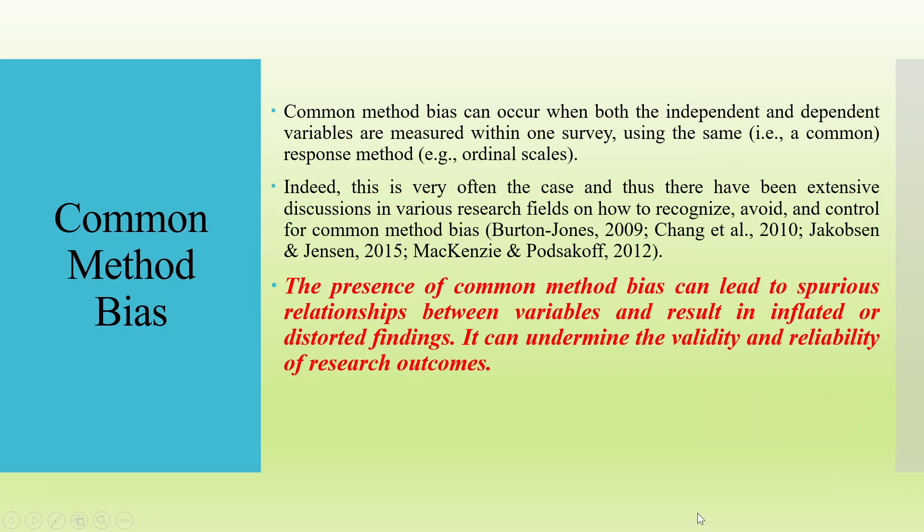Common method bias can occur when both the independent and the dependent variables are measured within one survey using the same response method. This is very often the case, and there have been extensive discussions in various research fields on how to recognize, avoid, and control for common method bias. The presence of common method bias can lead to spurious relationships between variables and result in inflated or distorted findings, undermining the validity and reliability of research outcomes.